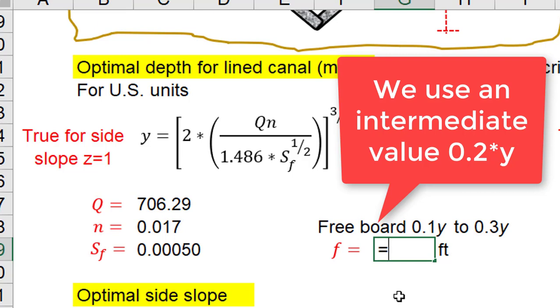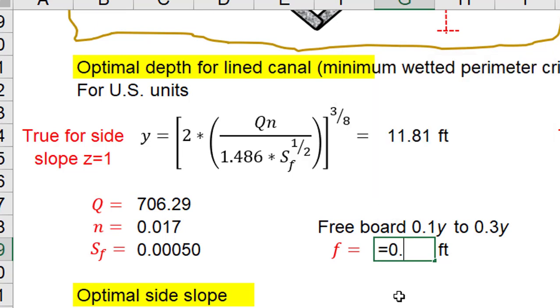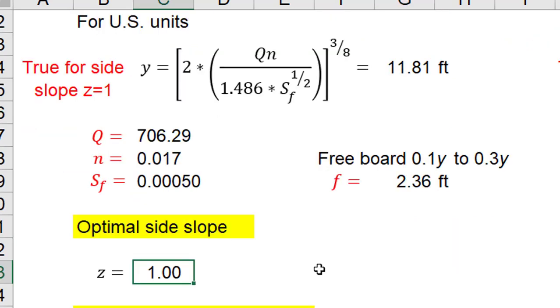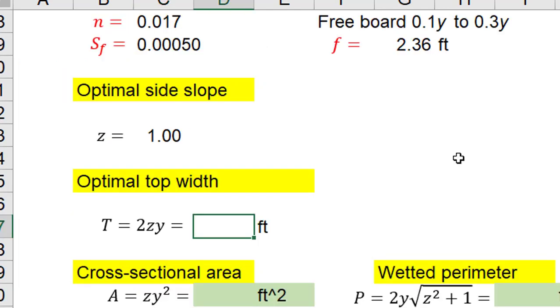The free board is equal to 0.2 multiplied by water depth, equal to 2.36 feet. The optimal side slope as I was saying is equal to 1.